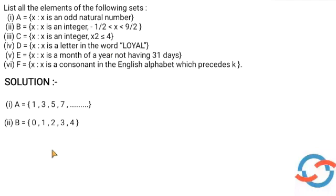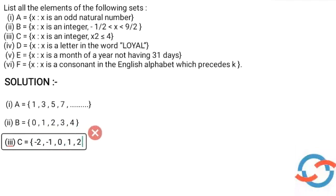So we write the set C. C equals the elements: -2, -1, 0, 1, 2. These are our 5 elements of C.